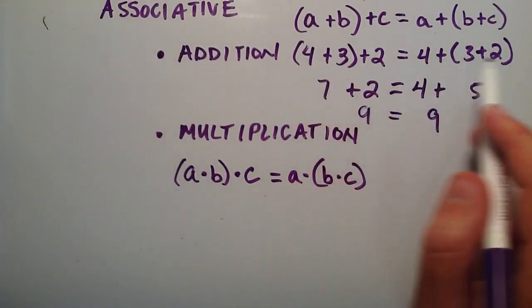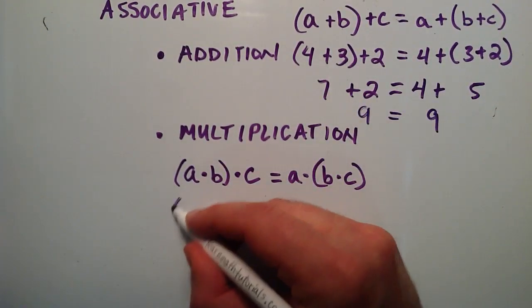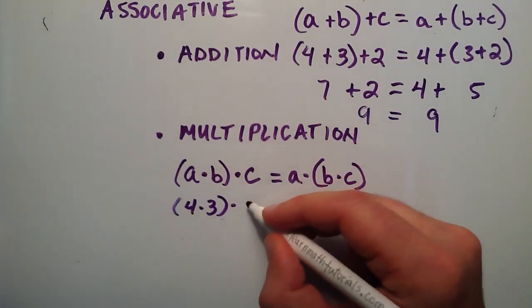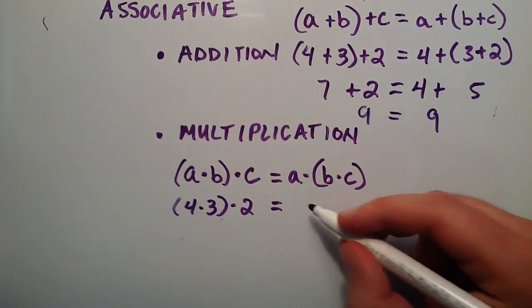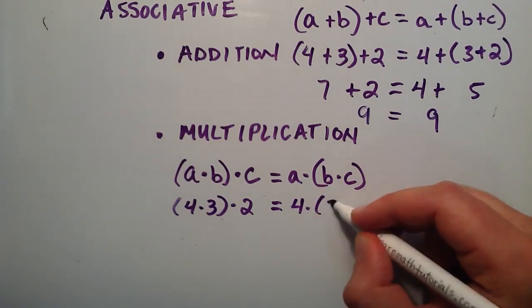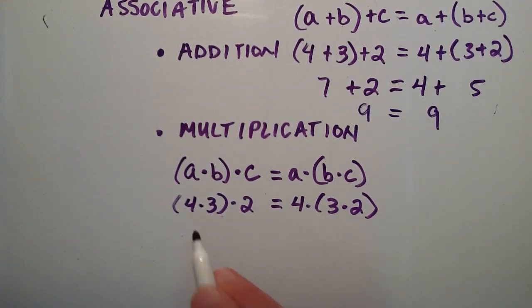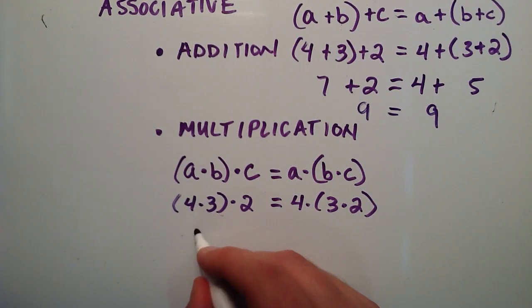If we use the same numbers, we write 4 for A, 3 for B, and 2 for C. We do the operation in the parentheses first. 4 times 3 is 12, then we have 12 times 2.